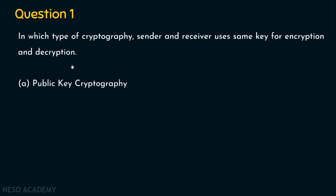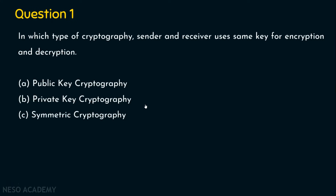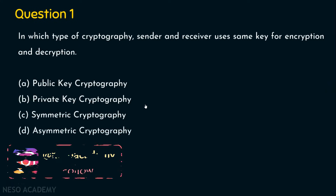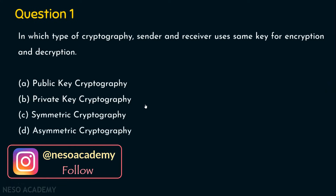The options are: Option A, public key cryptography. Option B, private key cryptography. Option C, symmetric cryptography. Option D, asymmetric cryptography.